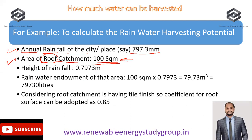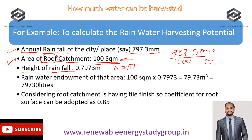The annual rainfall of 797.3 mm is given in millimeters, so we divide by 1000 to convert it to meters. Doing this calculation gives us 0.7973 meters — this is the height of the rainfall we need to consider.